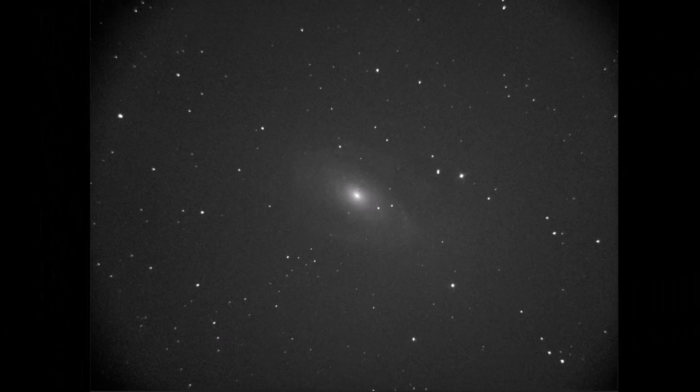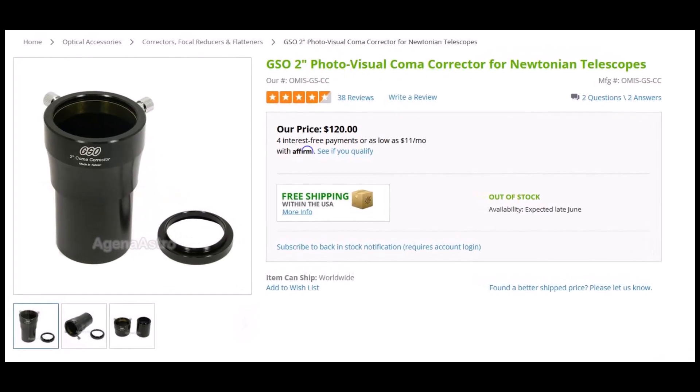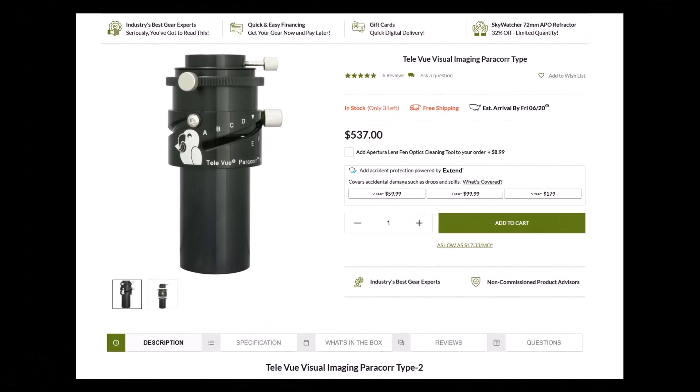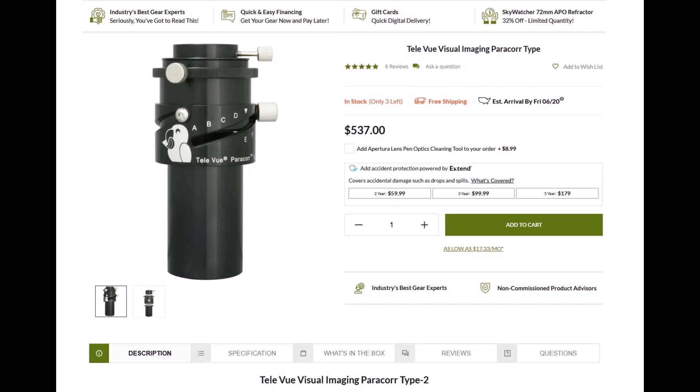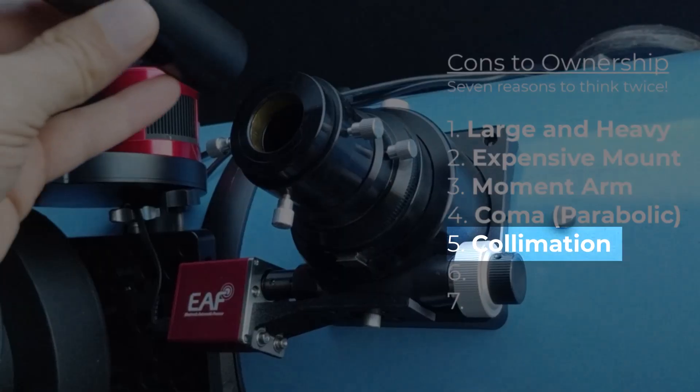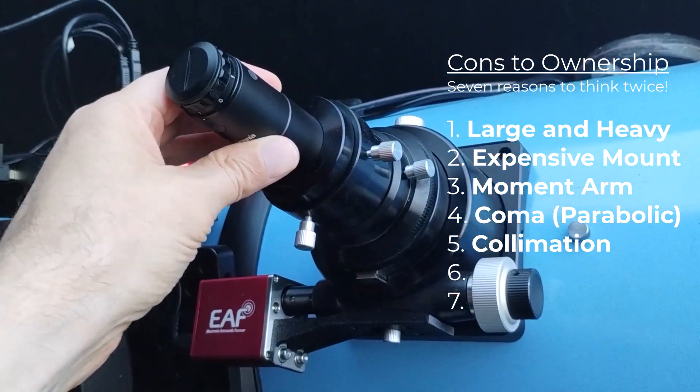So coma correctors are truly needed for imaging with one of these fast Newtonians, but they can be expensive. In fact, some coma correctors can cost more than the telescope itself. So be warned. Now, given that we know there are issues with the optical design of a Newtonian, this makes collimation essential.